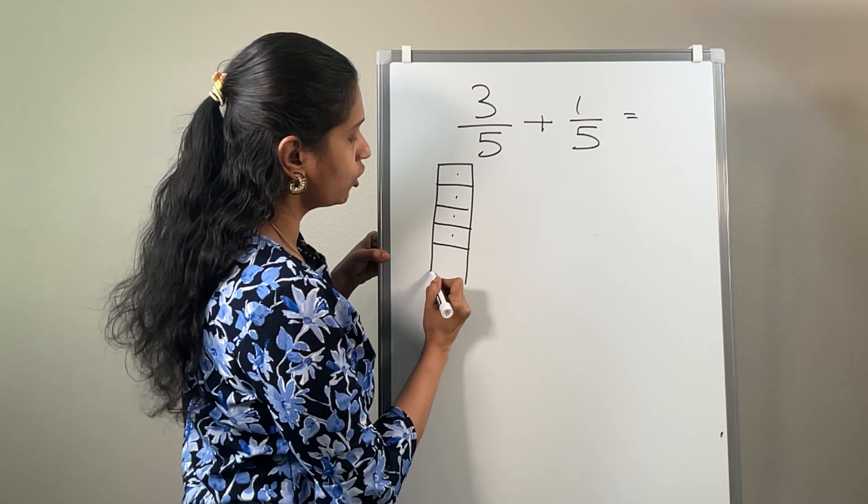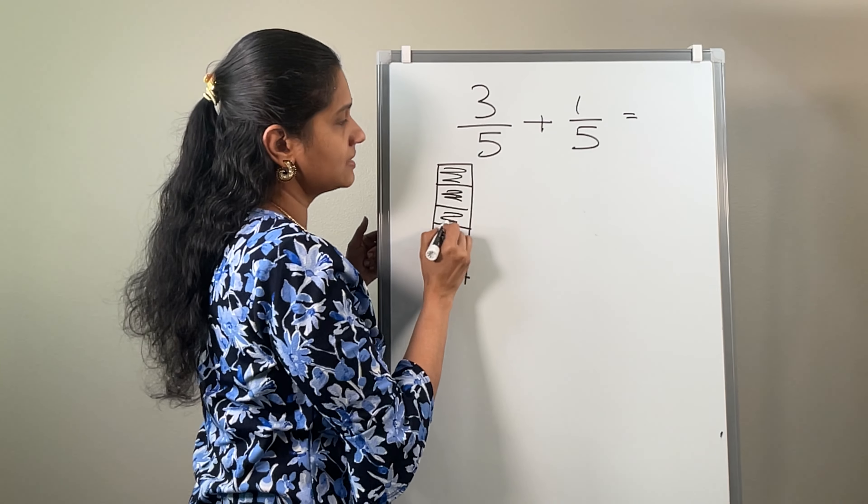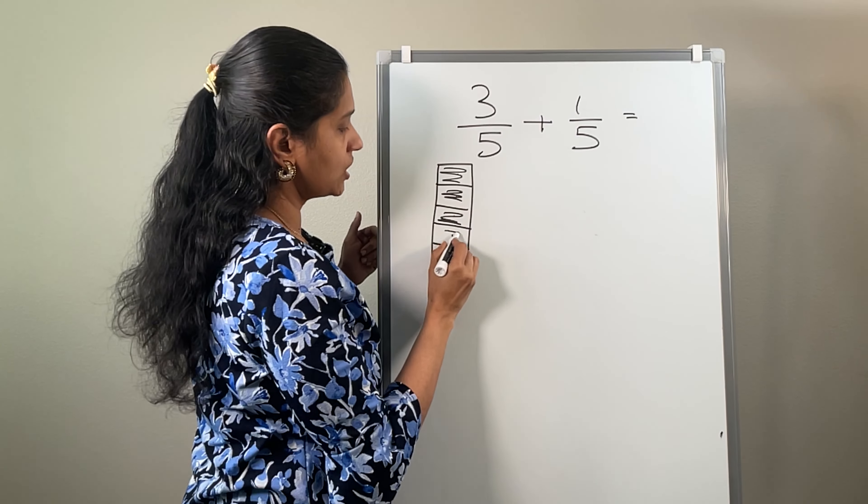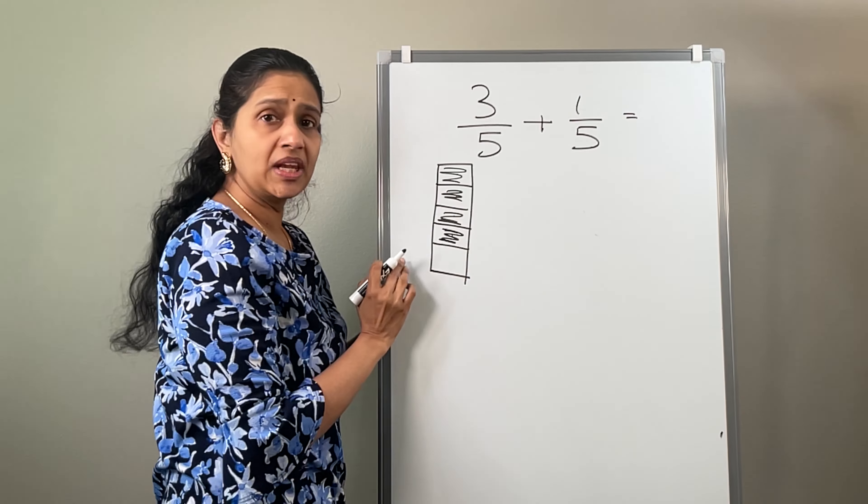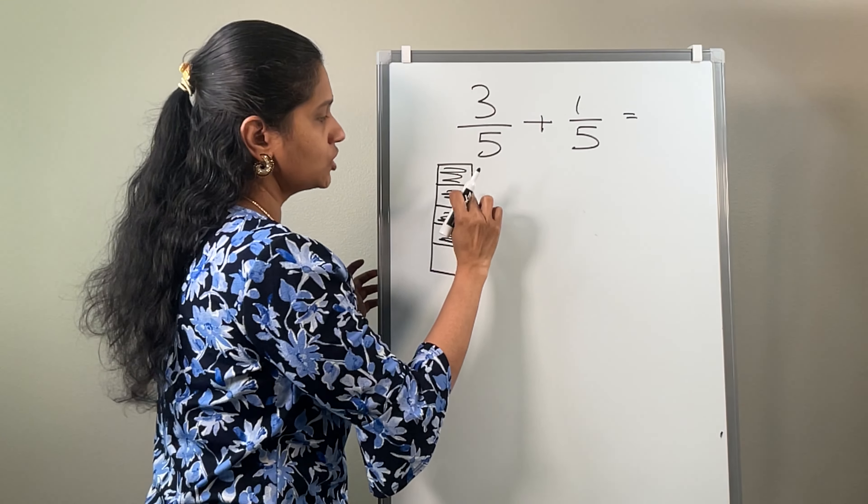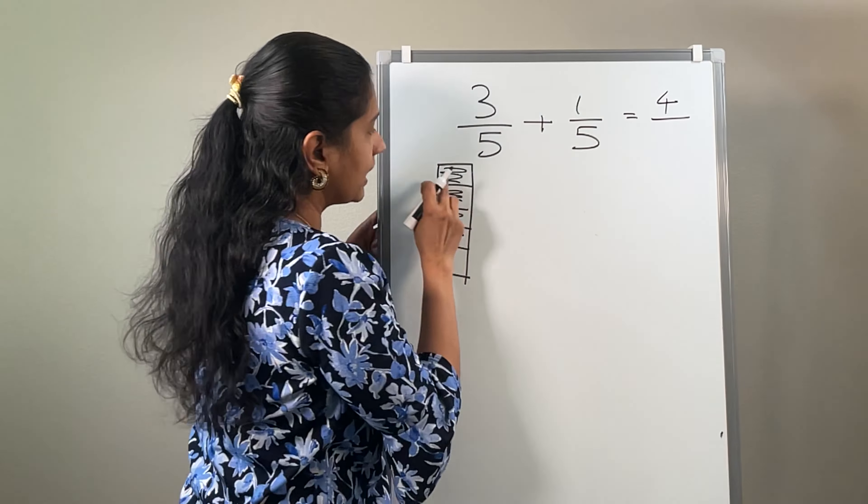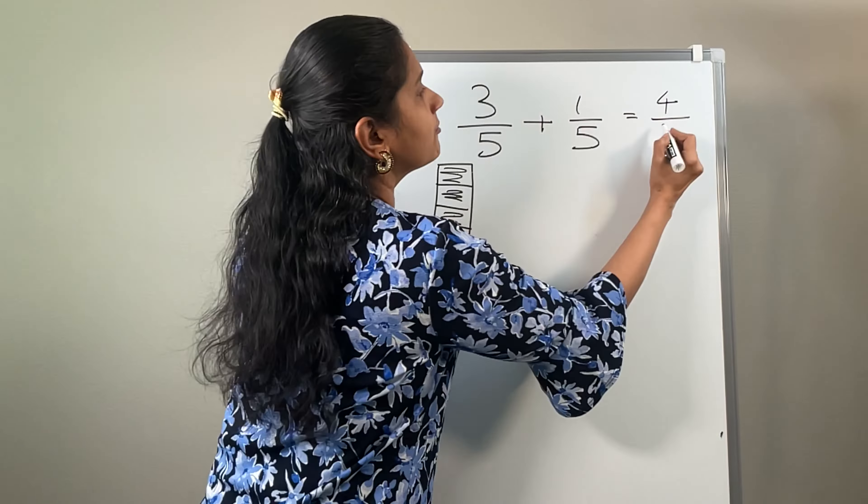In that, what is the numerator here? 3. So I am shading 3 parts. And here, what is the number? 1 in the numerator. So I am shading that 1 part. So how many are shaded totally? 1, 2, 3, 4.